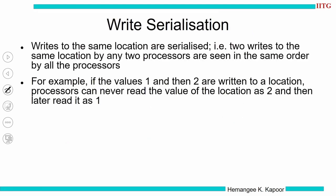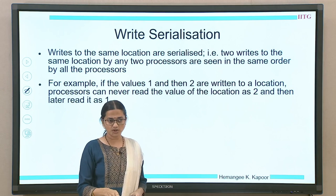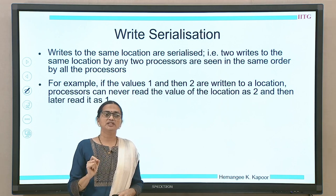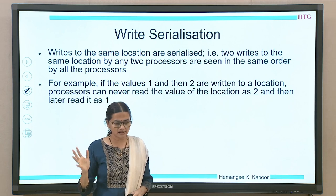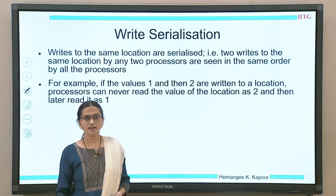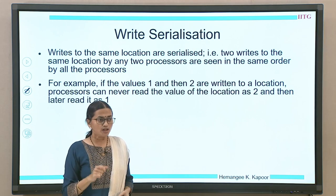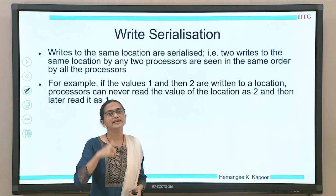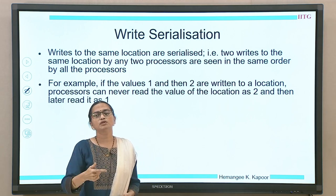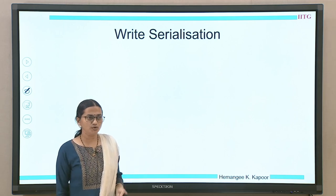The third condition is write serialization. This says that if we are doing two consecutive writes to the same location — whether by the same processor or by different processors — these writes should be seen in the same order by everybody in the system. The main memory should see the same order, and any other process should also see the same order. So if I write x equal to 1 and then x equal to 2, there should be no other process in the system which sees x equal to 2 first and then x equal to 1, as that would violate the write serialization property.